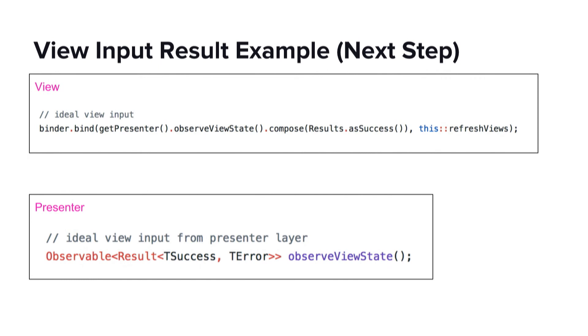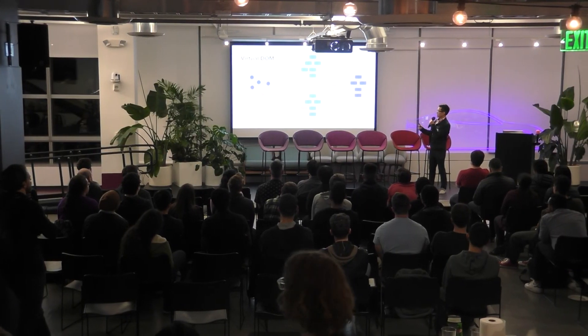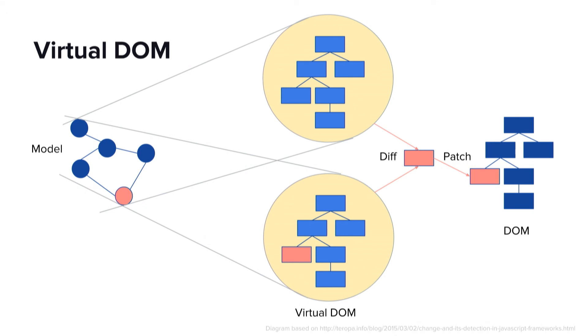Now you might be wondering: if we refresh or redraw the entire screen on every model change, isn't that going to negatively impact performance? One of the ways we can maintain declarative UI programming while also maintaining high performance is through one of the lessons learned from React — the virtual DOM. The virtual DOM allows the developer to adopt a mental model of refreshing the entire screen, while behind the scenes it makes sure it's performant by redrawing only the changed part of the view. The equivalent of the DOM on Android is the Android layout system, including linear layouts, edit text, and buttons. The virtual DOM is an in-memory Java abstraction on top of every Android widget. When the model changes, we create a new Java view tree in memory. Then the virtual DOM does a diff of the new state compared to the old view tree, and intelligently decides which part of the real DOM to redraw.